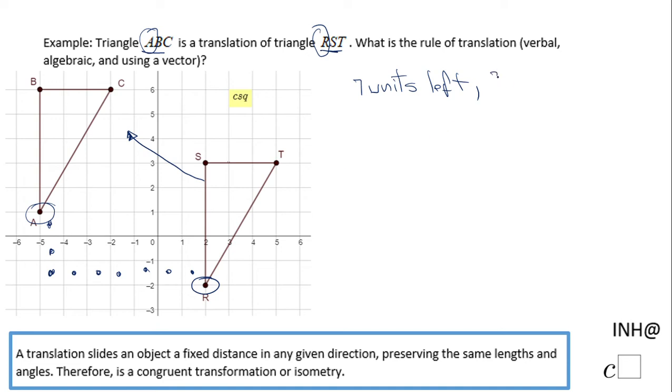Let's go and do the algebraic way. (x,y) becomes - and again since we have the verbal rule we can go from there. Left means when you move left you subtract, so x minus seven. And when you move up for the y, you're gonna add. So this is the algebraic rule.